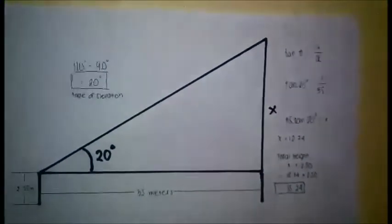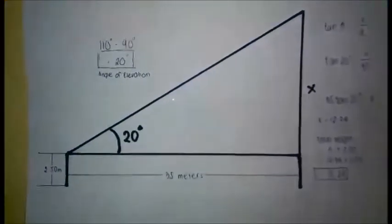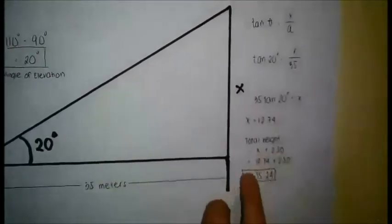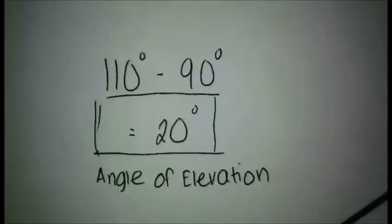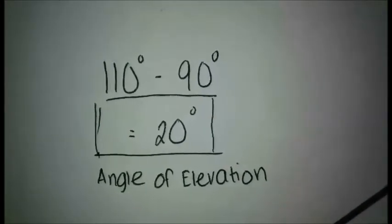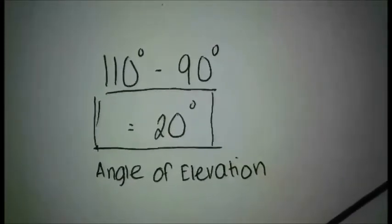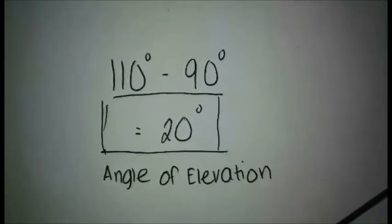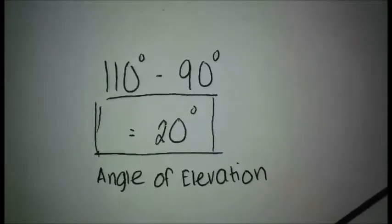In finding the total height of the 11 Nobility signboard from the ground, we distanced ourselves 35 meters away from the building. To solve for the angle, the clinometer has two measurements: the obtuse angle and the acute angle. In our case, our obtuse is 110 degrees and our acute is 70 degrees.